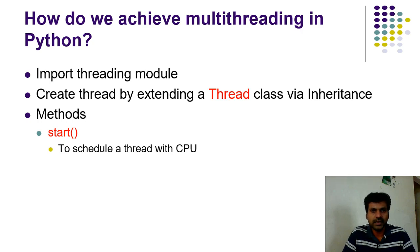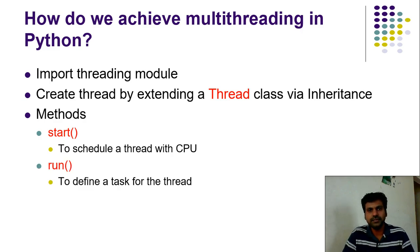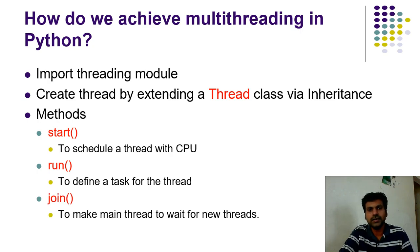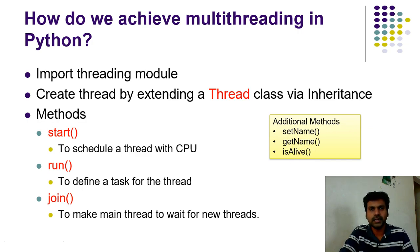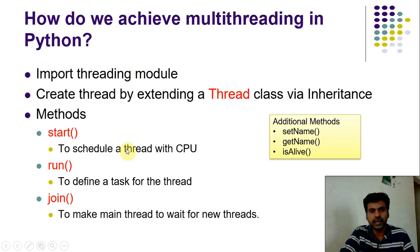The Thread class provides key methods: the start() function assigns the thread to the CPU; the run() function defines a task for the thread; the join() function makes one thread wait for another thread to complete. Additional methods include setName() and getName() for assigning and accessing a thread's name, and isAlive() to check whether a thread is running or not.